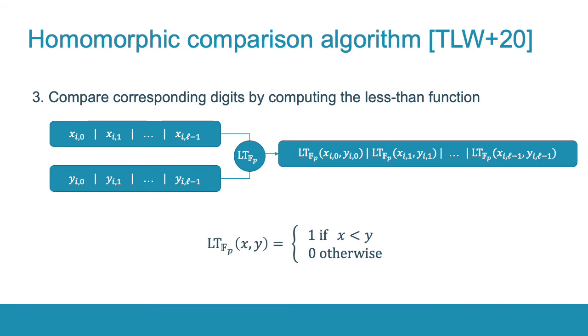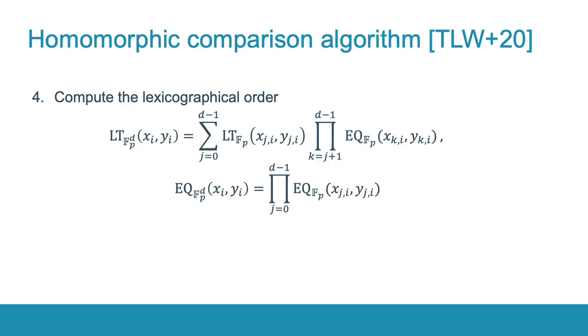In the third step, similarly, the corresponding pairs of digits are compared with the less-than function, that returns 1 if the left argument is smaller than the right one, and 0 otherwise. Finally, the results of the equality and the less-than functions on digits are combined by the lexicographical order. First, we compute the lexicographical order per each block of d digits. And then combine the results in the final lexicographical order equation that gives us 1 if X is smaller than Y and 0 otherwise.